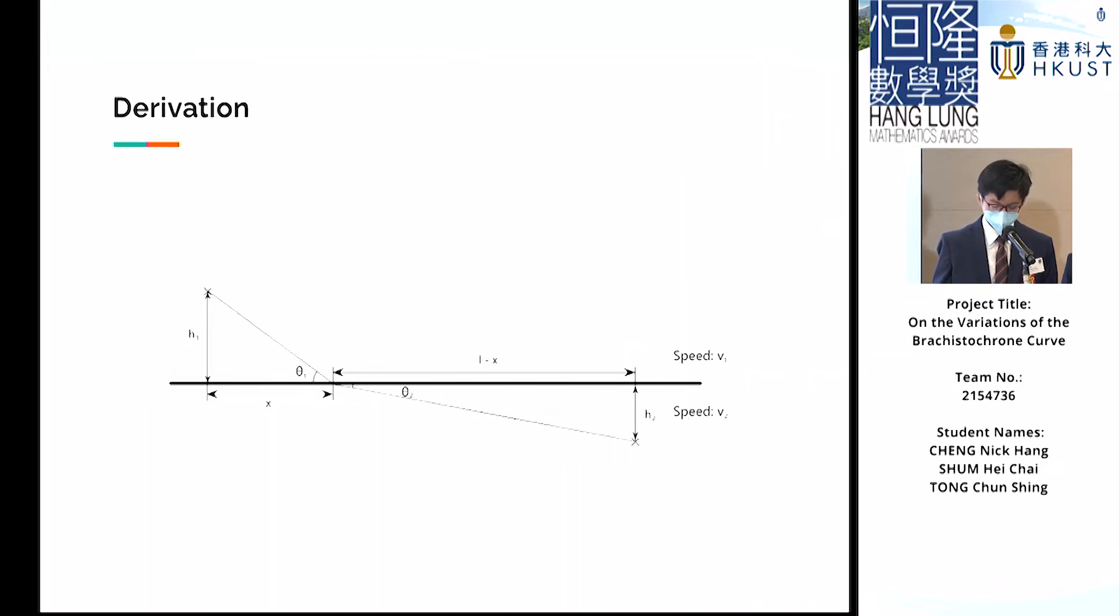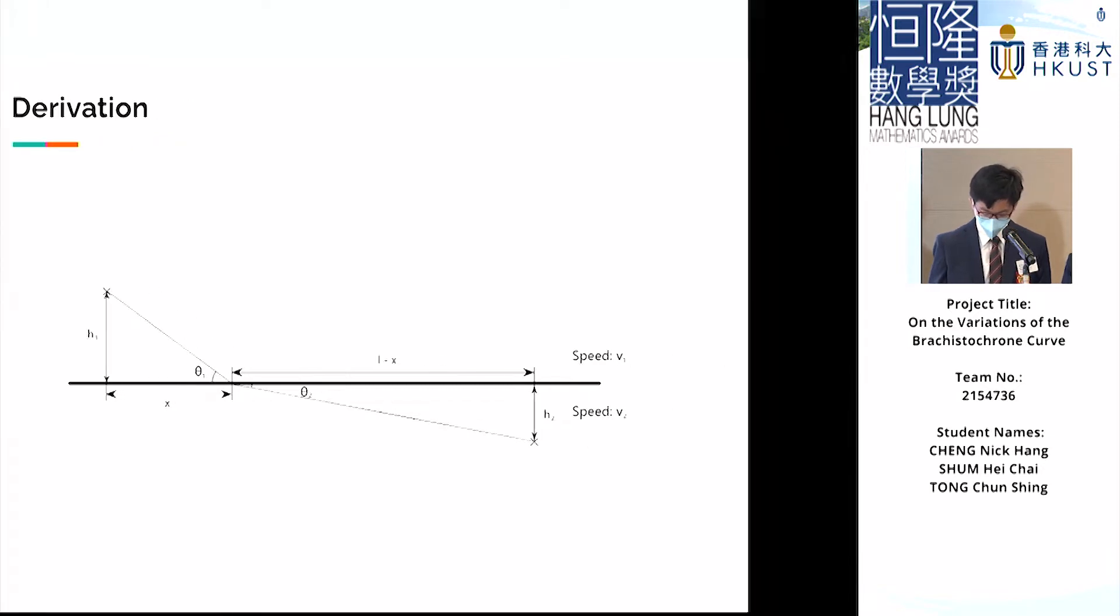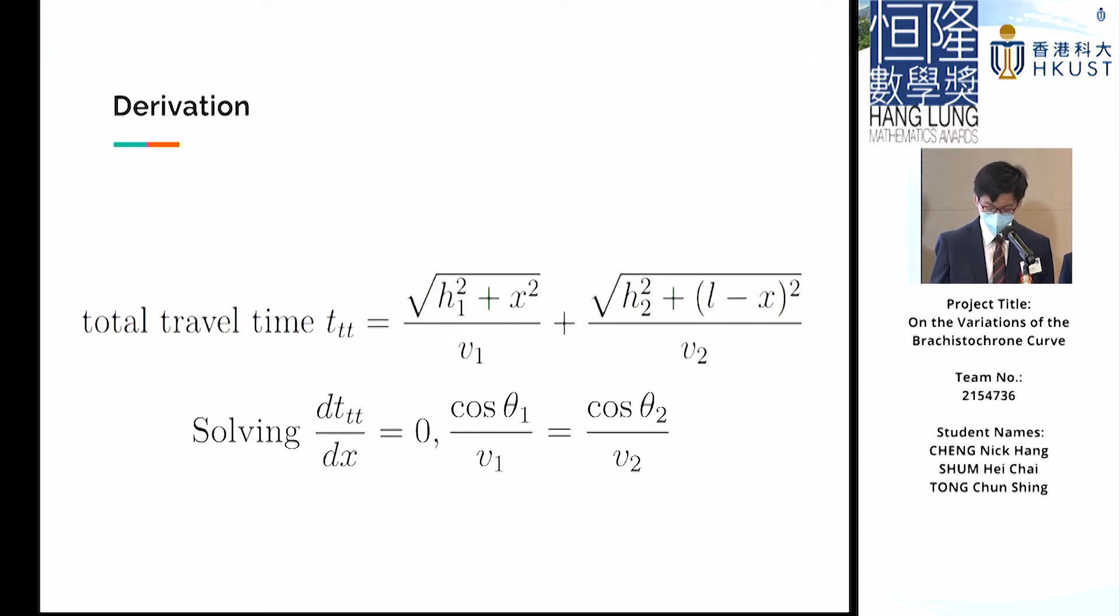We first consider the simplest setup to optimize the total time of travel, where the two given points are in two media separated by a horizontal boundary. If the object travels at constant speed v1 and v2 in each medium, then to optimize the travel time, it will travel in a straight line in each medium. The remaining variable would be the position at which the object crosses the boundary, and we let this be x. We express total time in terms of x and optimize its value.